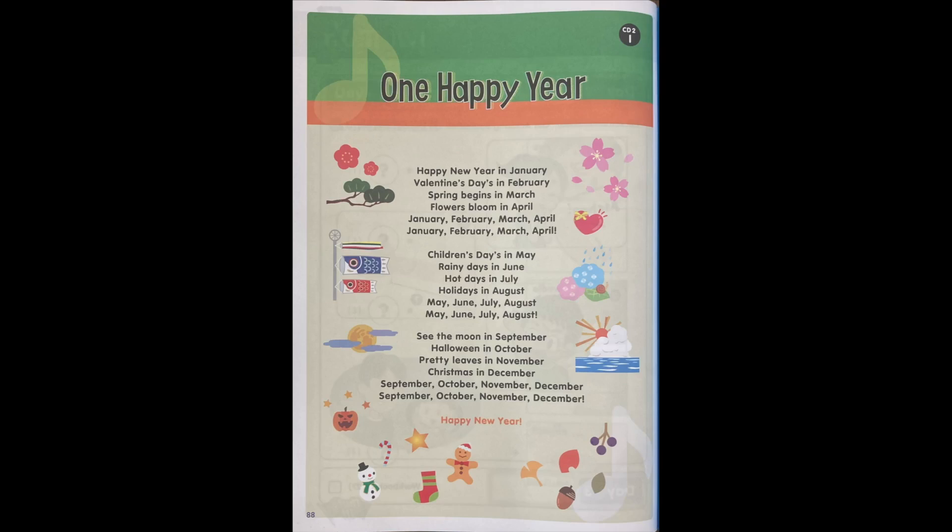Happy New Year in January. Valentine's Day is in February. Spring begins in March. Flowers bloom in April. January, February, March, April. Children's Day is in May. Rainy days in June. Hot days in July.